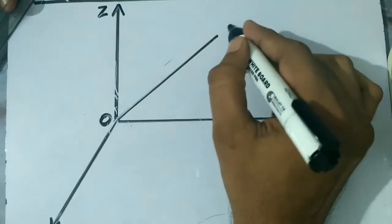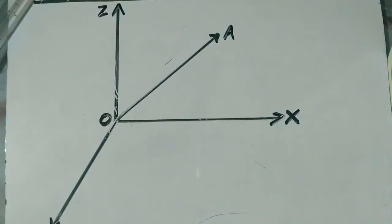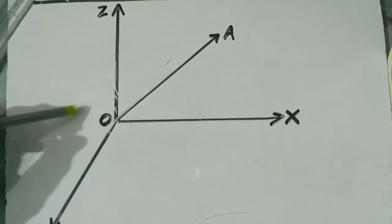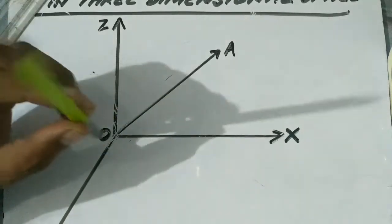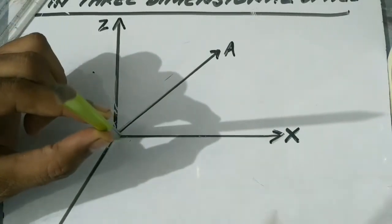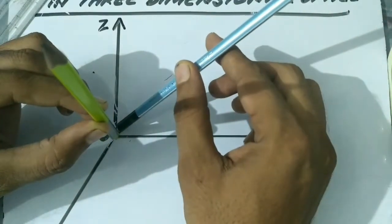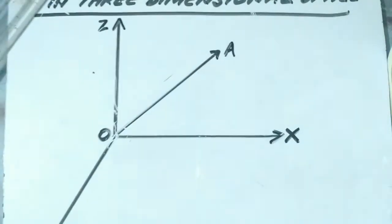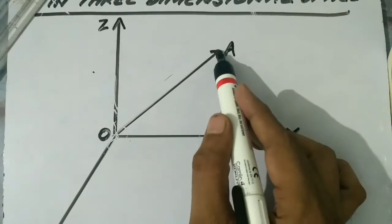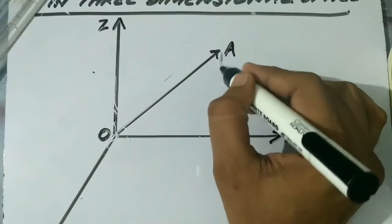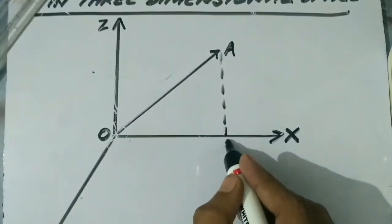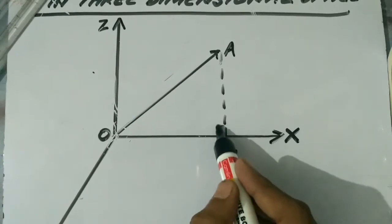Now let us talk about a vector representation with reference to three mutually perpendicular straight lines. Let it be vector OA. OA is a vector which is also in space — we need to imagine it in this space; it is not on the plane. We can draw a perpendicular from A to the x-axis; let it be AL. So AL is perpendicular to the x-axis.